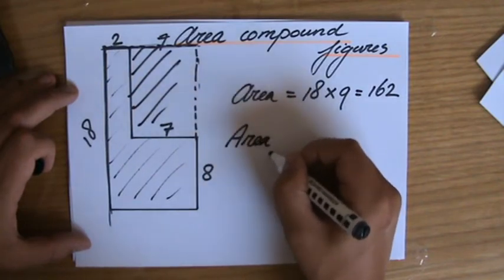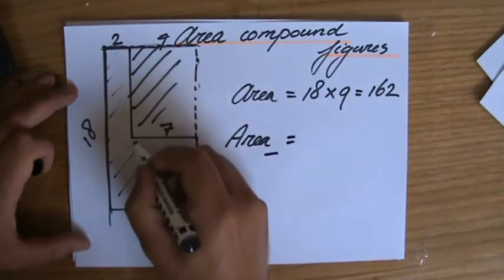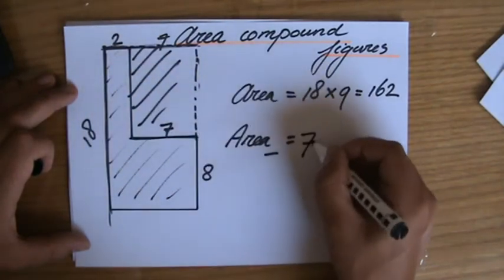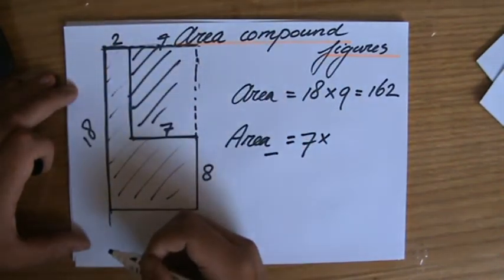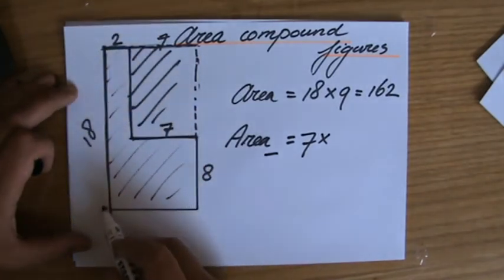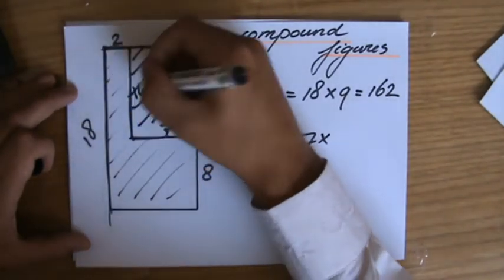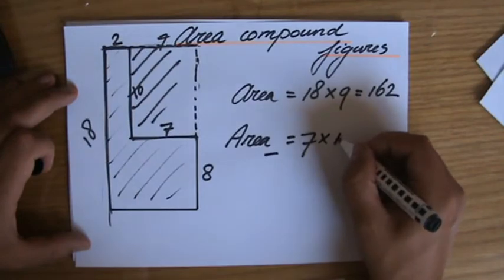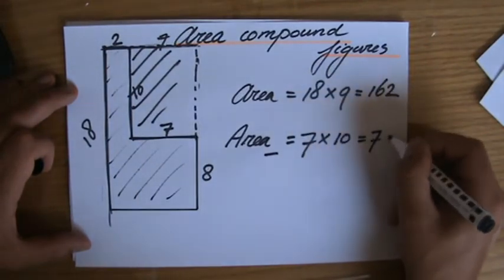So the area, let's put a minus sign there, that is 7 times, and what is the length there? Hmm, 18, 8, that is 10. So 7 times 10 which is 70.